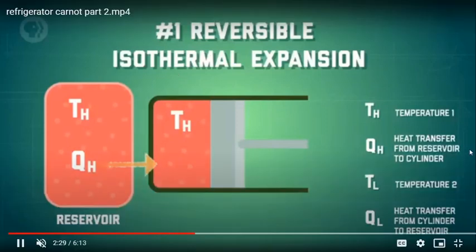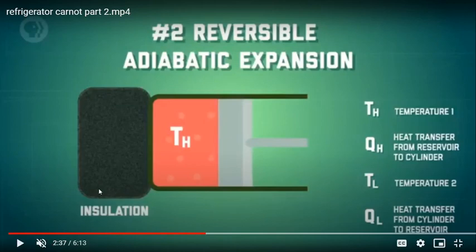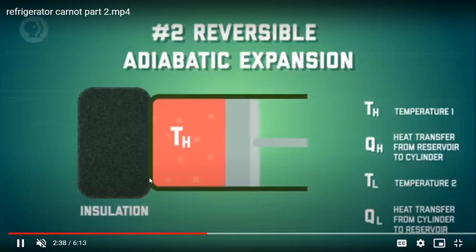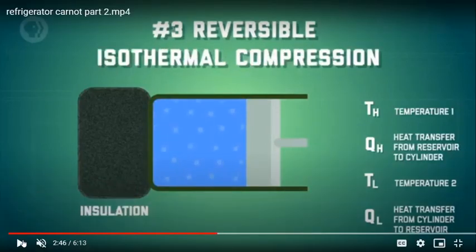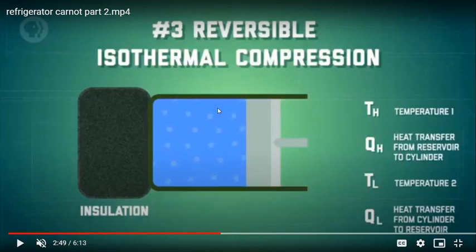In the third stage, we remove the insulation and place the cylinder in contact with the cold reservoir (sink). The gas is compressed isothermally at the lower temperature. There is heat rejection at constant temperature.